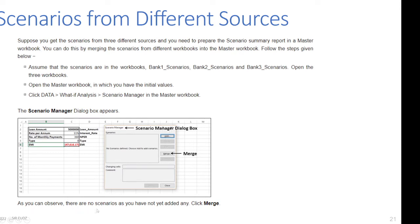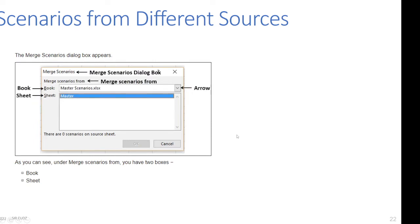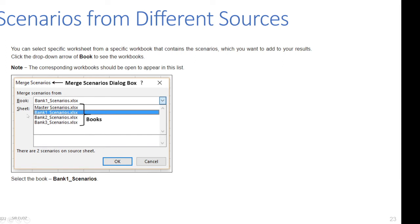Instead of clicking Add, click Merge — because the scenarios will be coming from different sources. The Merge Scenario dialog box appears. Under 'Merge Scenarios From', you have two boxes: Book and Sheet. You can select a specific worksheet from a specific workbook that contains the scenarios you want to add. Click the drop-down arrow of Book to see all opened workbooks.